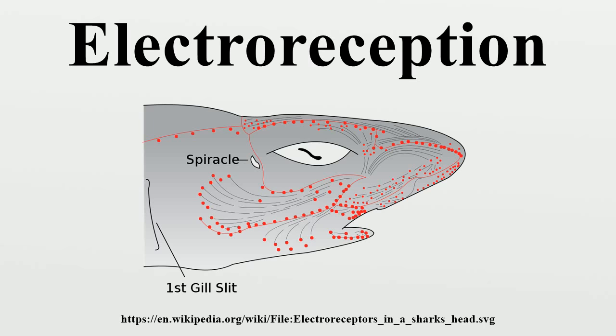This field is modulated by the opening and closing of the mouth and gill slits. Many fish that prey on electrogenic fish use the discharges of their prey to detect them. This has driven the prey to evolve more complex or higher frequency signals that are harder to detect.